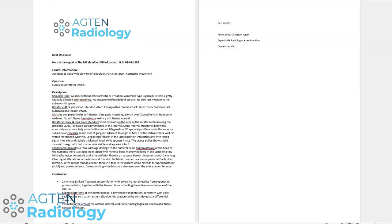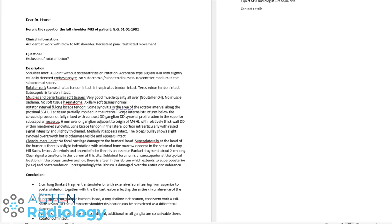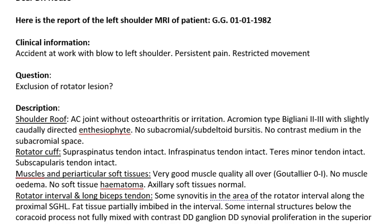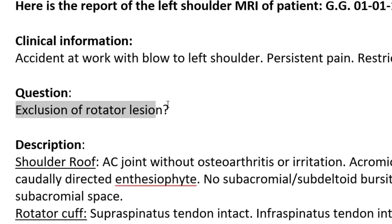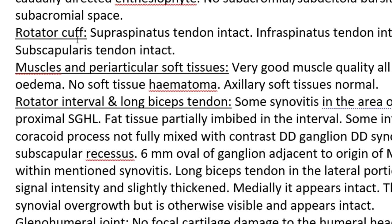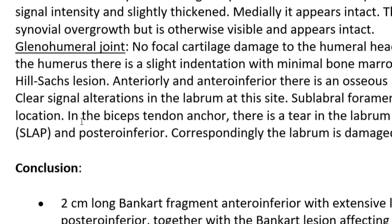The fourth tip is to actually answer the question that the referring physician has, even if we get caught up in an accidental finding or in something way more obvious or dramatic than what the referring physician was asking for. If we look at this report, we have the request here — there was an accident at work, persistent pain, restricted movement — and the question is actually about a rotator cuff lesion. So we go through the structured reporting template, we have all our paragraphs and subheadings from the template.